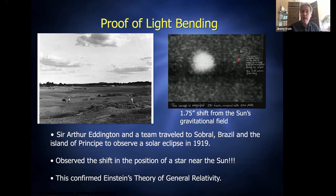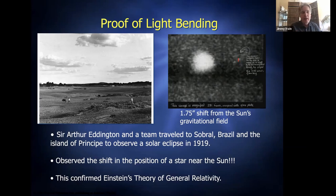It turns out the 1914 failure was a good thing for Einstein, because he had actually made an error in his calculation — he was off by a factor of two, predicting a shift twice as large as the actual value. Between 1914 and the next opportunity in 1919, he found and corrected his error. In 1919, two teams went to the southern hemisphere — one in Brazil and the other on the island of Príncipe — to observe the eclipse.